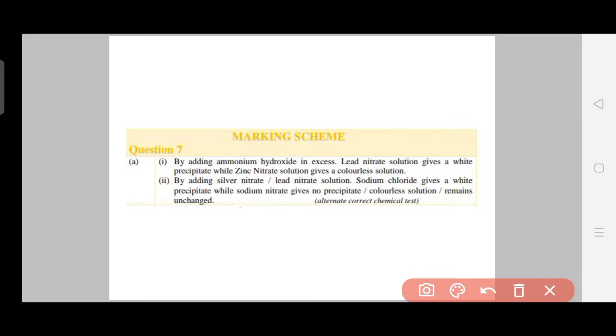Here see the answer. The first question answer is that by adding ammonium hydroxide in excess, lead nitrate solution gives a white precipitate while zinc nitrate solution gives a colorless solution. So basically you have written a color name for this question, which is what I wanted to tell you. The color name is very important in this chapter. See the second answer question: By adding silver nitrate or lead nitrate solution, sodium chloride gives a white precipitate while sodium nitrate gives no precipitate or colorless solution or remains unchanged. Alternate correct chemical tests - all of them are accepted.